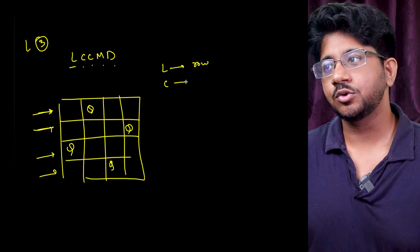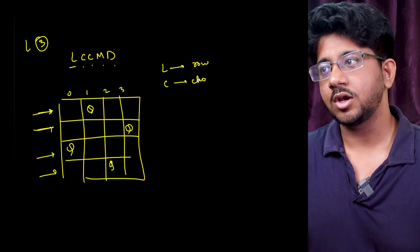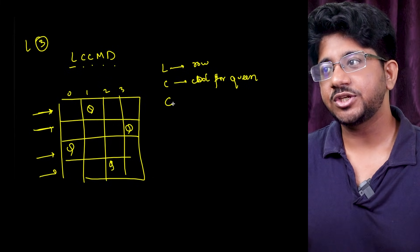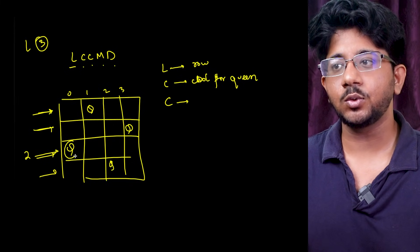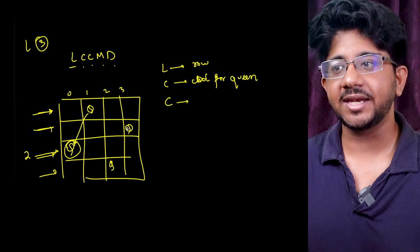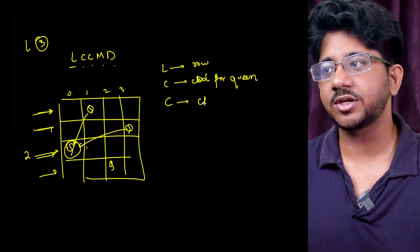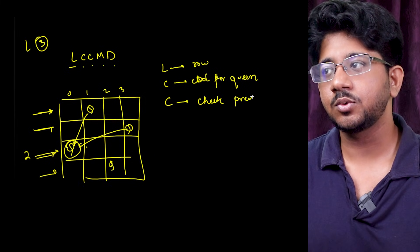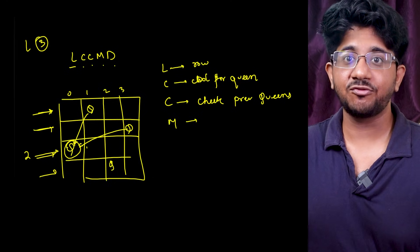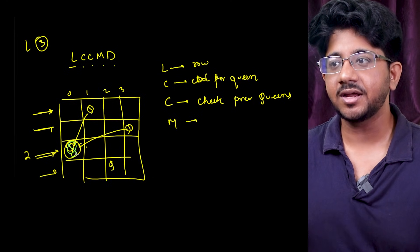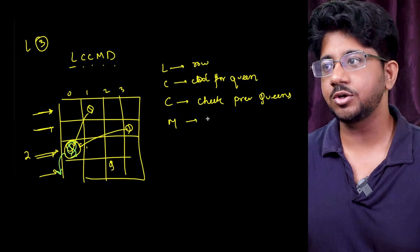In this case you can define level as your row, choice as your which column number will you put column for queen. Then check is when you are suppose in row 2 in this level and you are placing queen here. Does it get attacked by any of the previous queens or not? This is what you call as check. Previous queens. M is move. If none of the previous queens attacked this particular place then it's a valid move. So you can place a queen here and then go to the next level. This is called move.